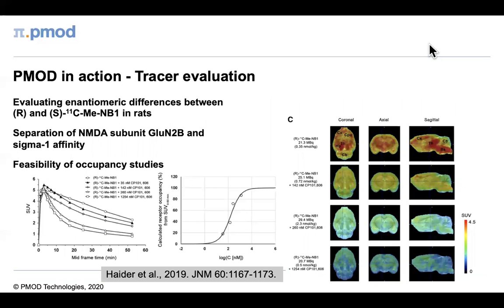Here you see receptor occupancy data from the development of a tracer for the NMDA receptor subunit GLU-N2B. The authors discovered that the R and S enantiomers of the tracer had very different affinity for sigma-1 as well as GLU-N2B. After separating the enantiomers, they quantified the brain uptake of the R enantiomer using PMOD, including blocking with three doses of the competitor, and generated the occupancy curve shown in the centre of the slide.